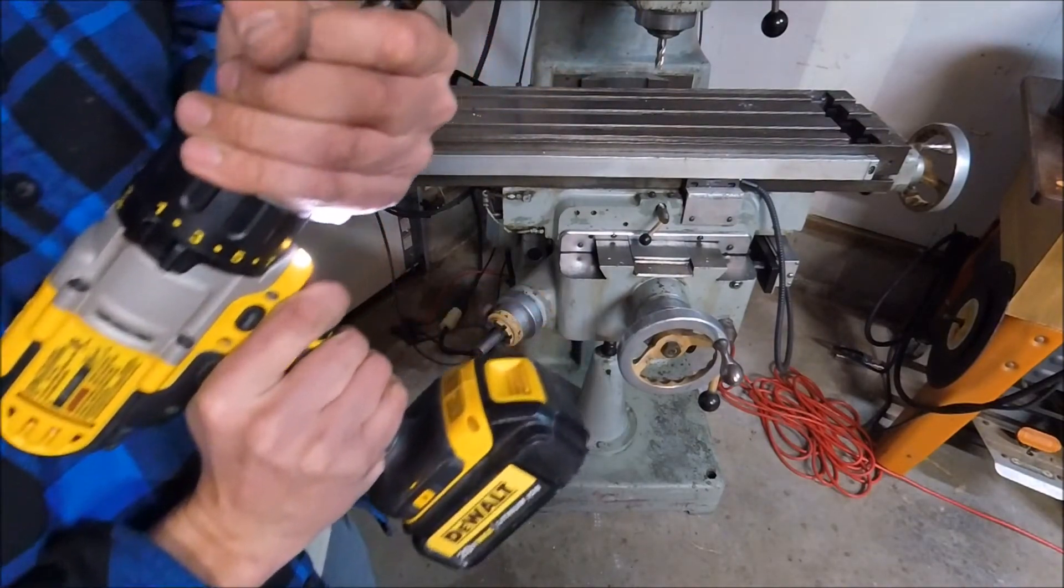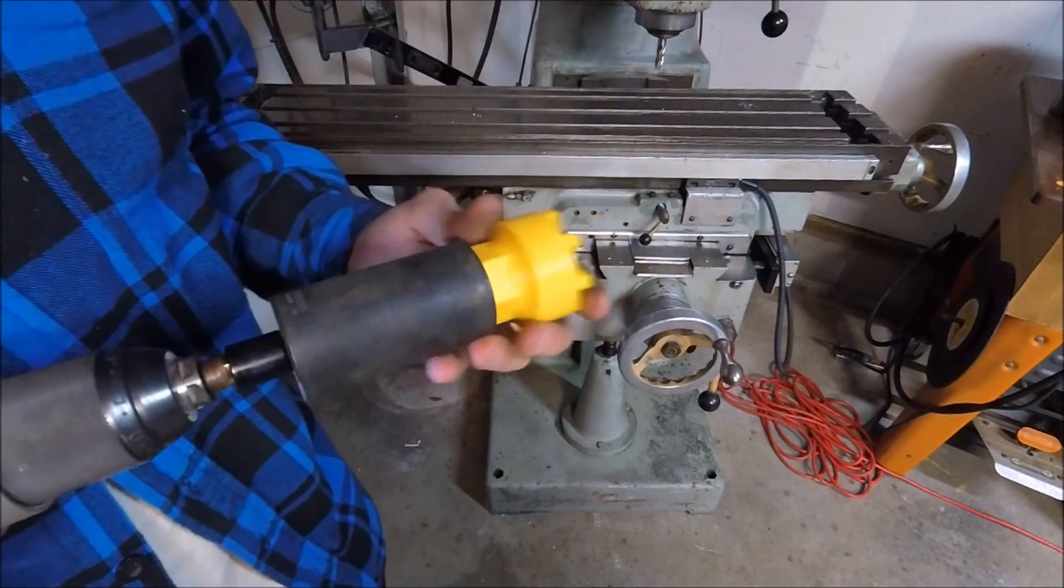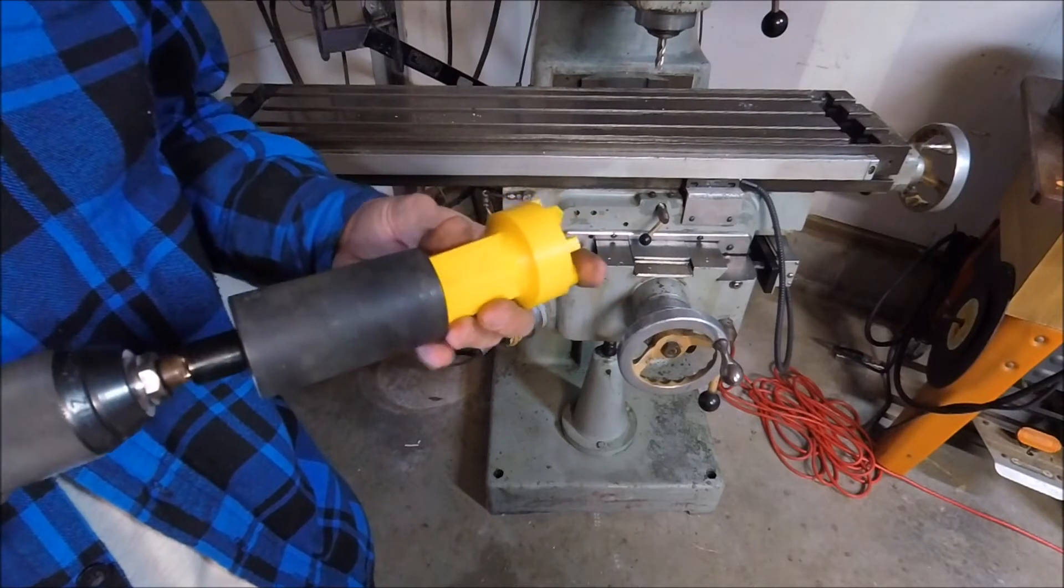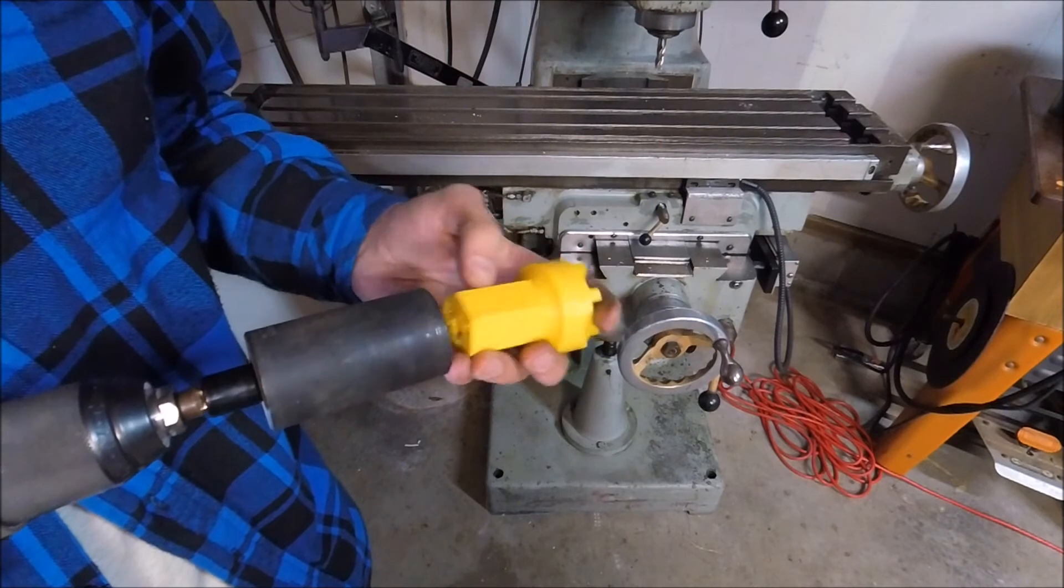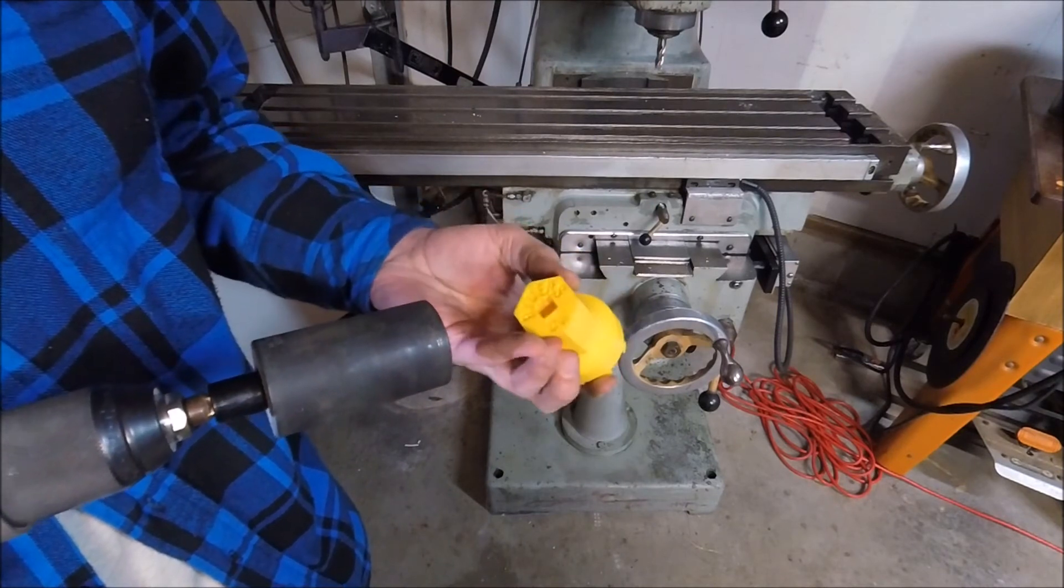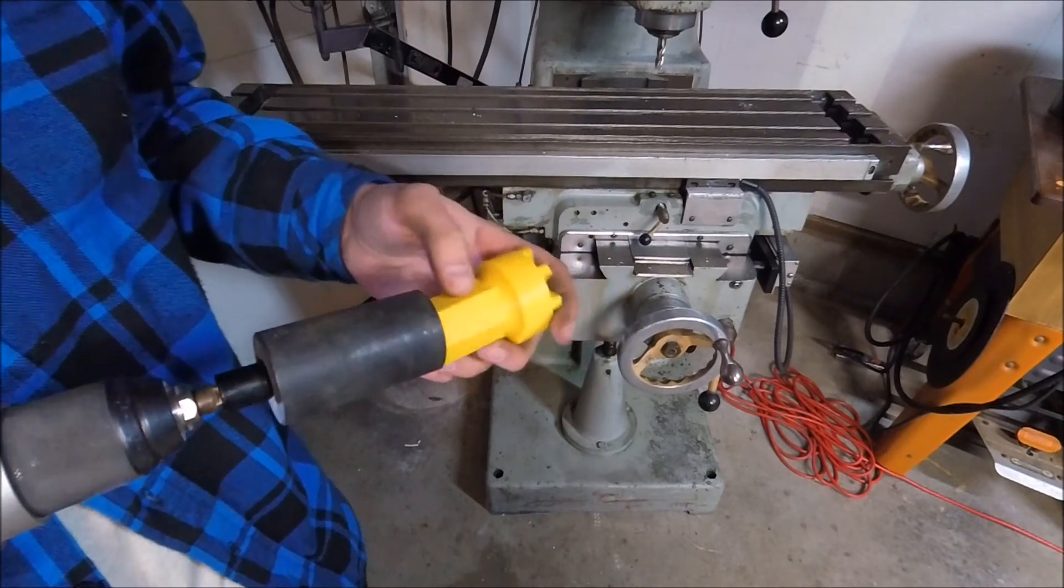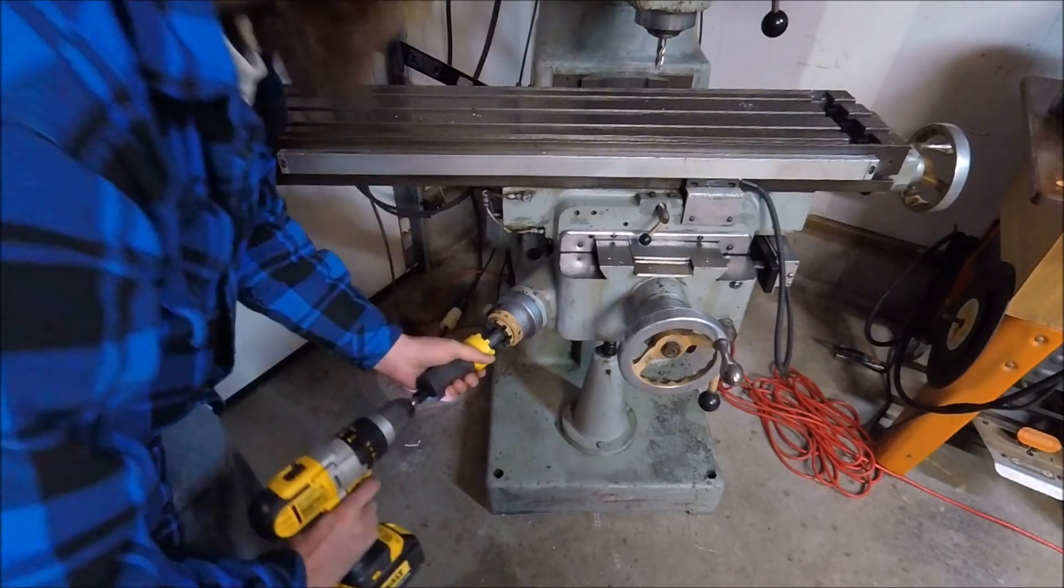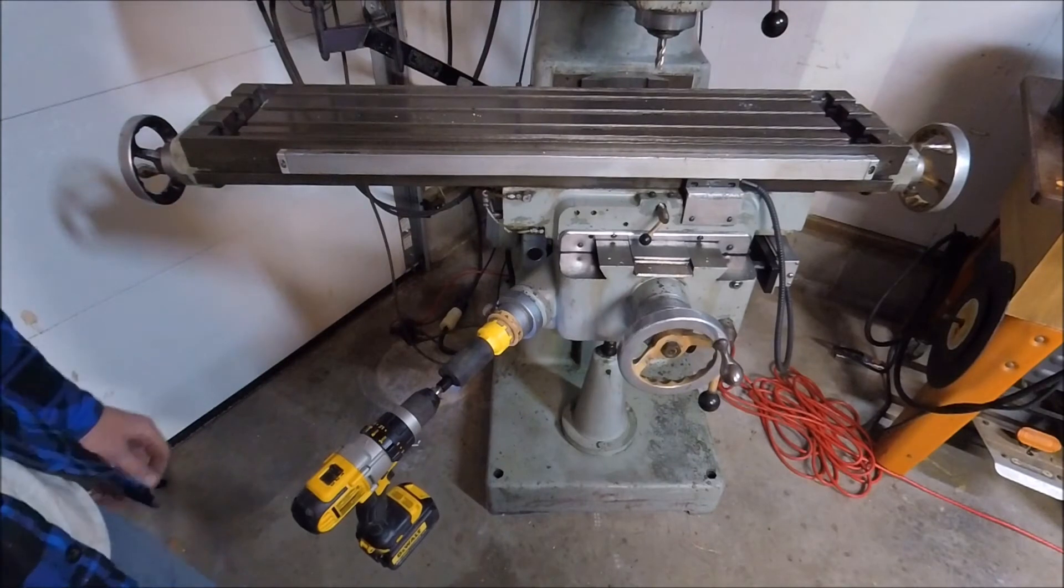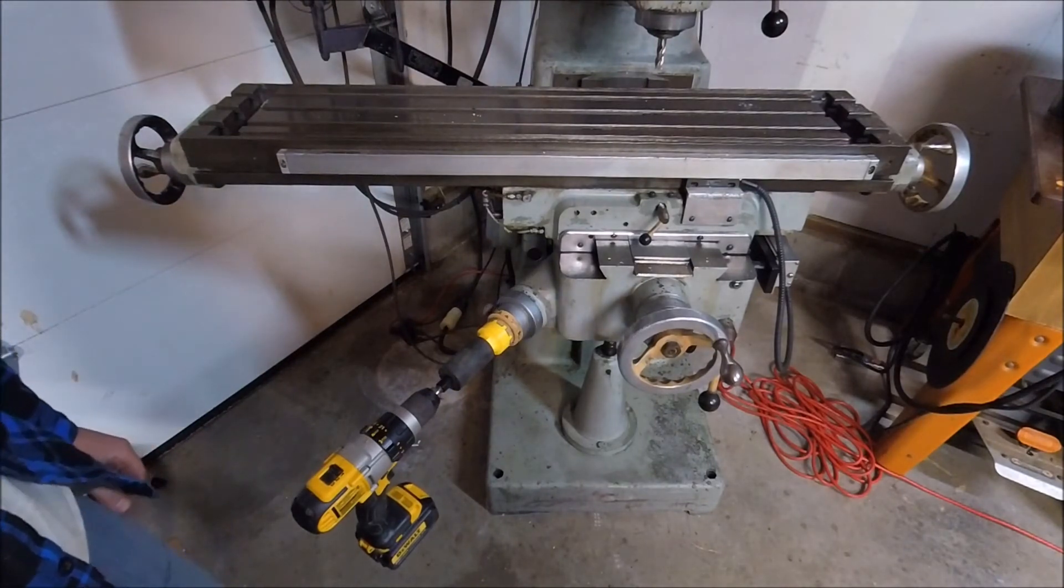We'll try this out. I think this theoretically would be the strongest because you have the most surface area. If this was to rip out, you'd have to basically make this hex round. Downfall to this is how much it sticks out here with your screw gun.